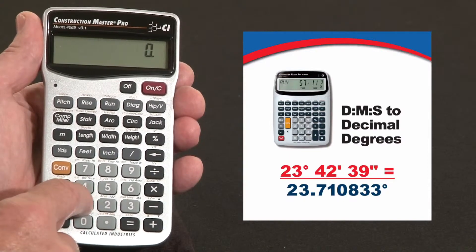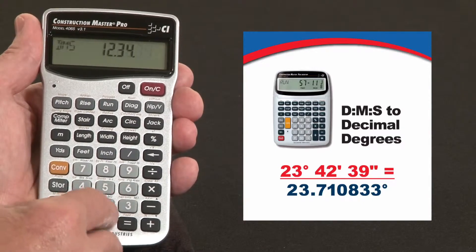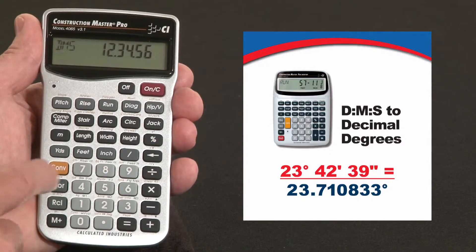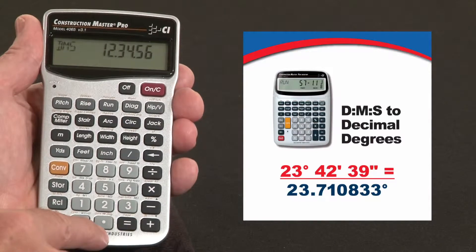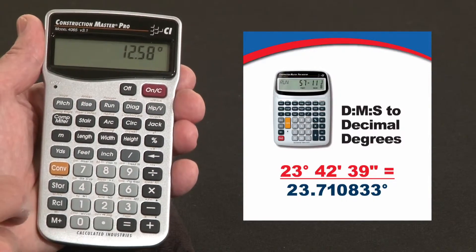Say you've got a set of plans that say 12 degrees, 34 minutes, and 56 seconds, and you want to convert that. Hit convert over the decimal point key. It says DMS to decimal degrees: 12.58 degrees.